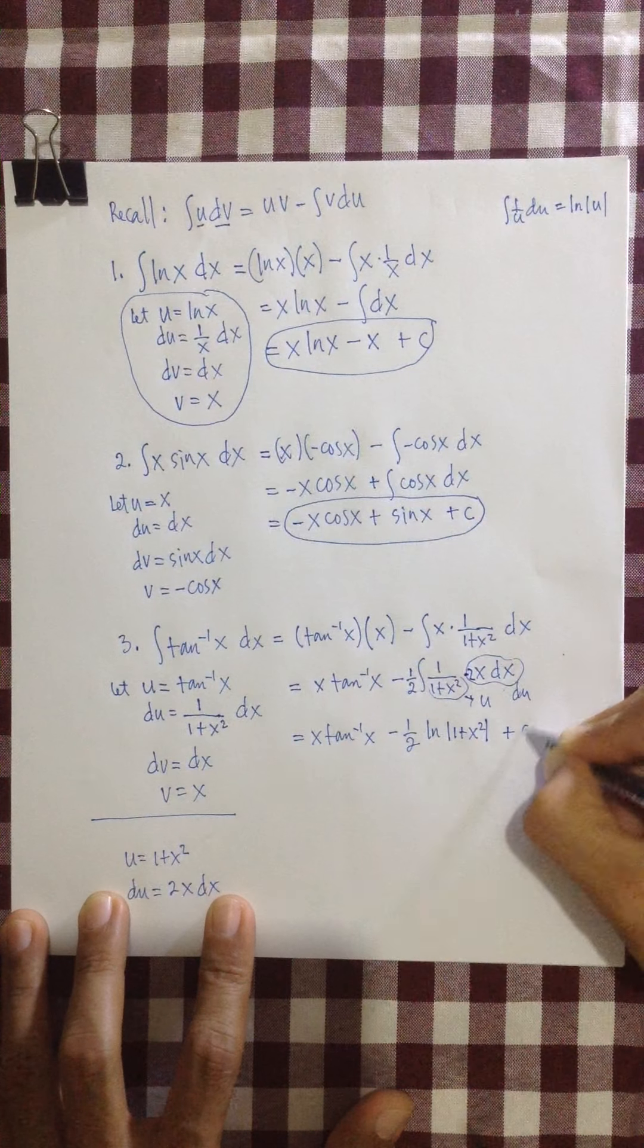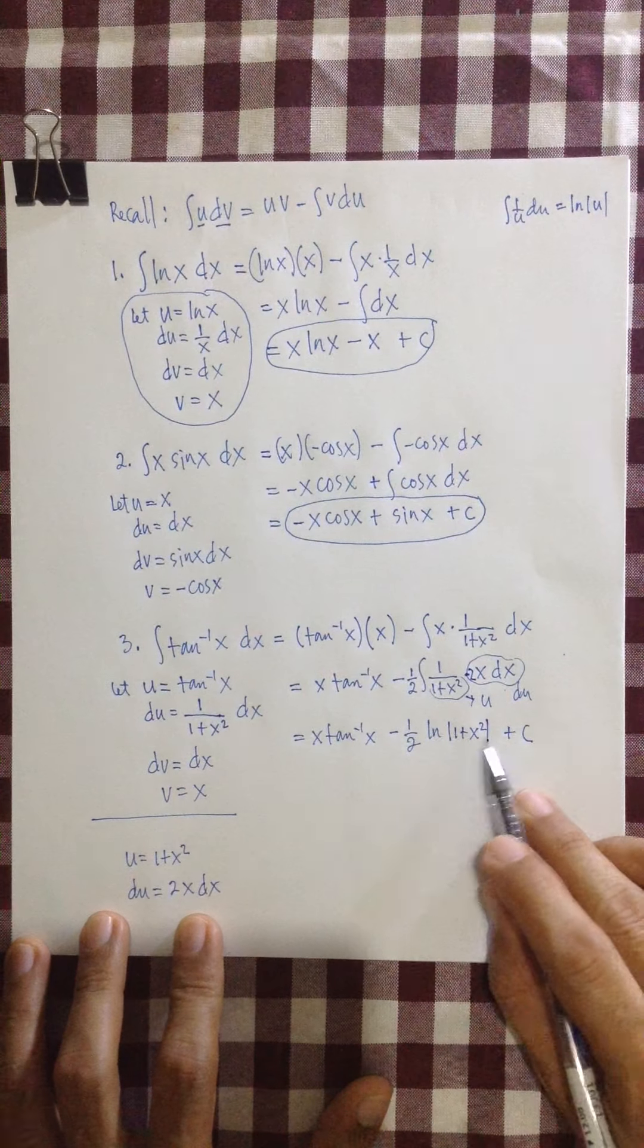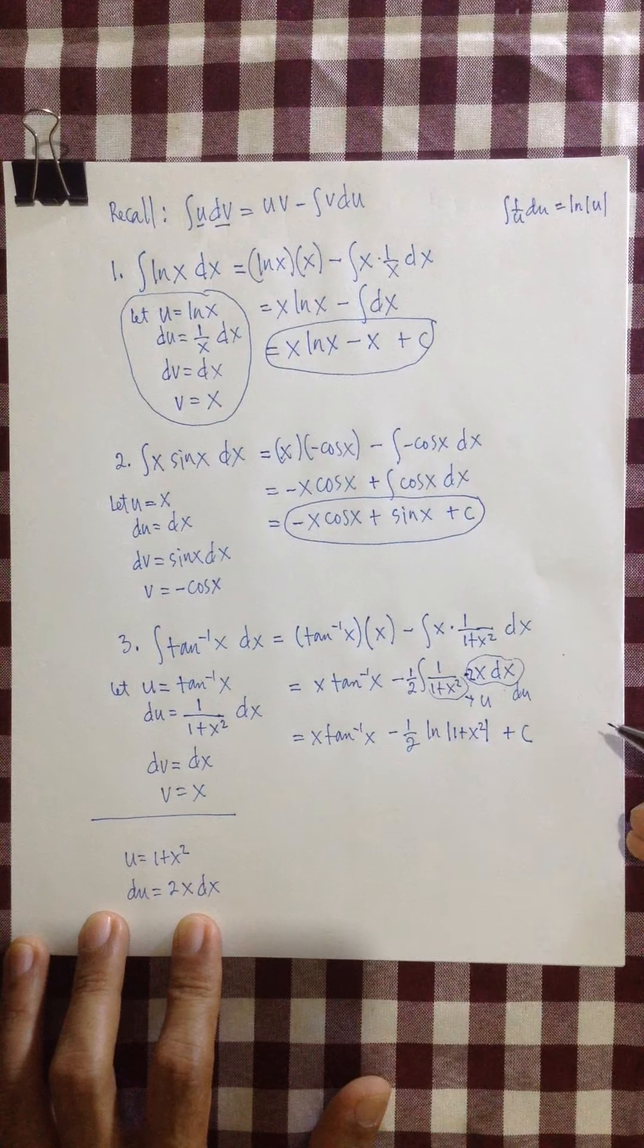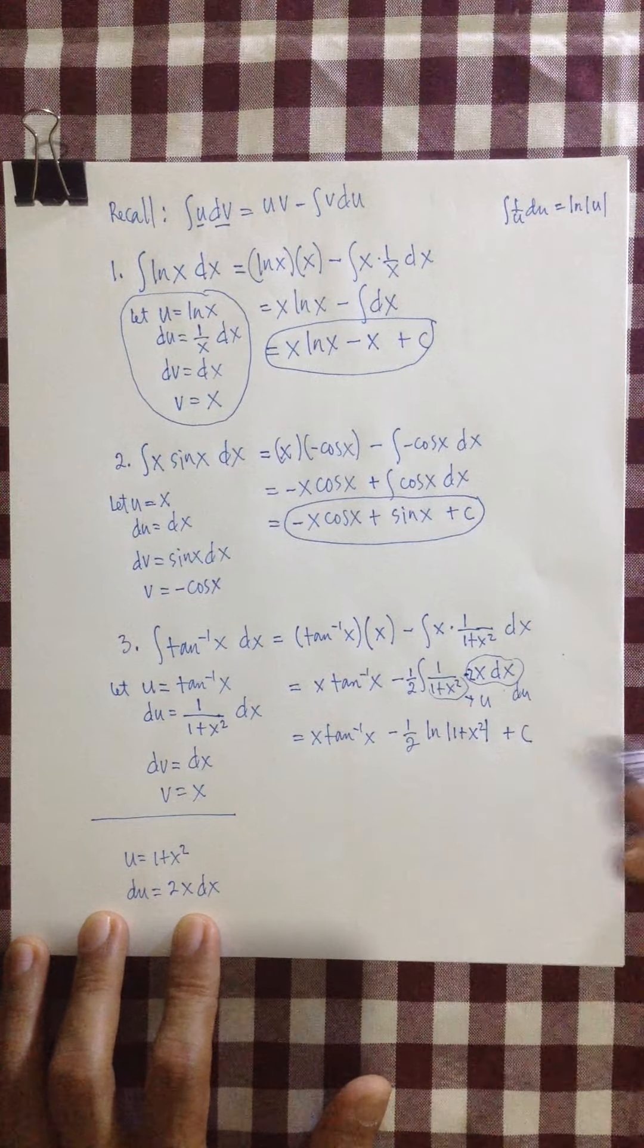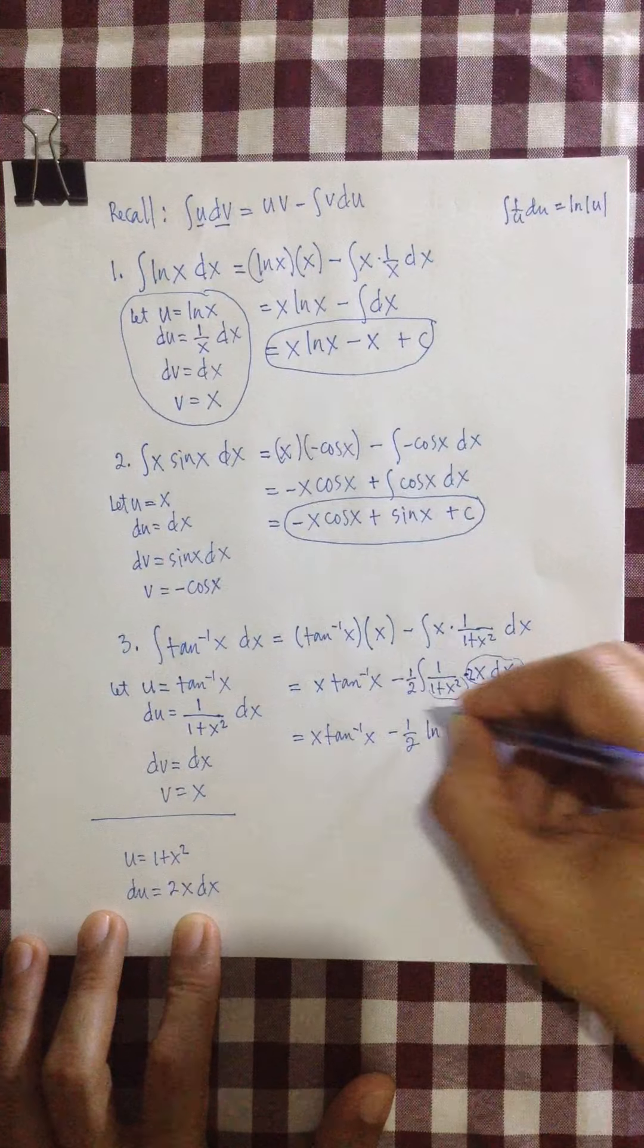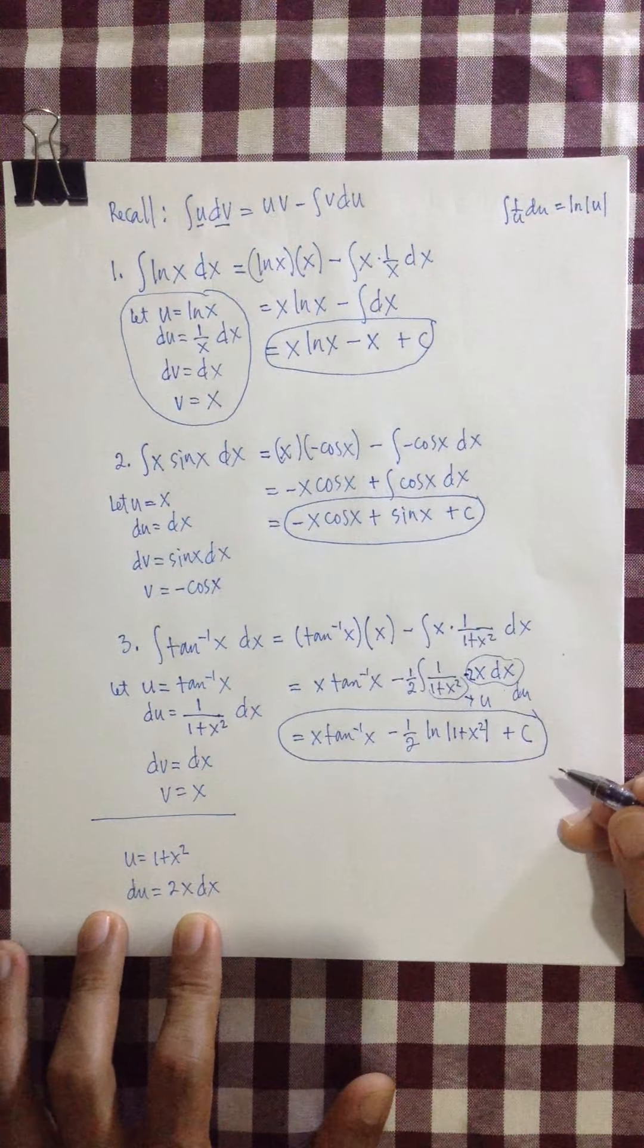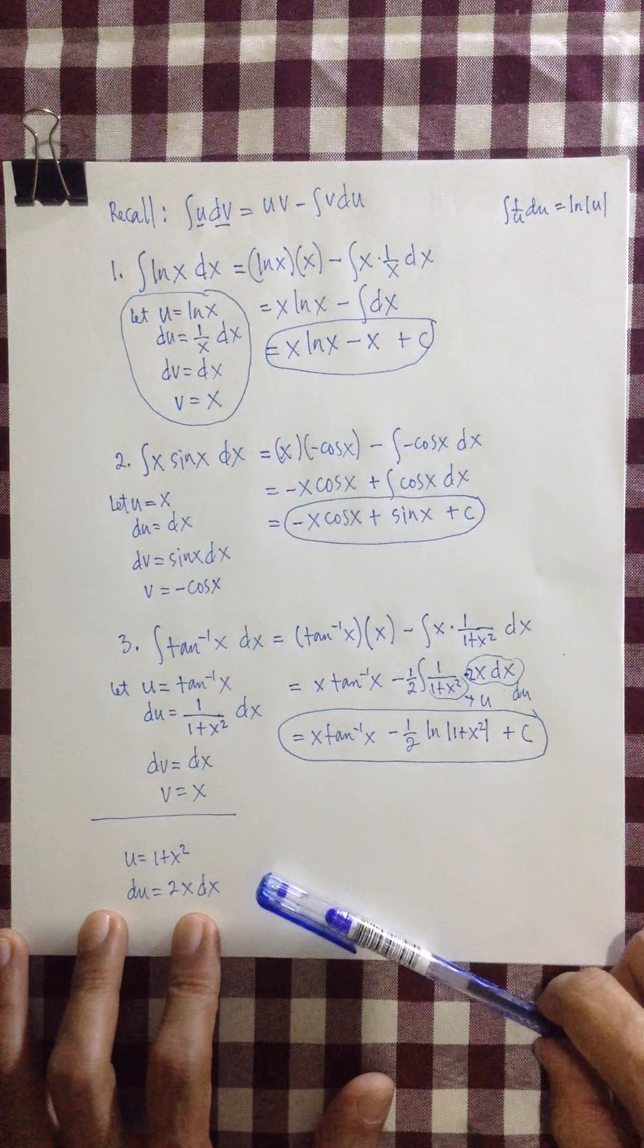Then your constant of integration. Of course, you can just replace the absolute value sign with closed and open parentheses because for whatever value of x, your 1 plus x squared is always positive. So we have this as our answer for integral of tangent inverse x dx.